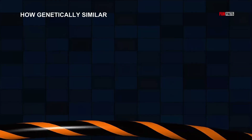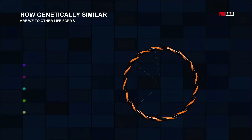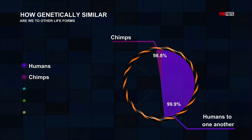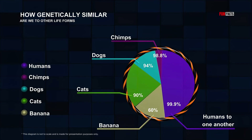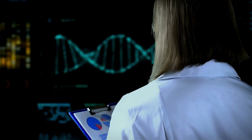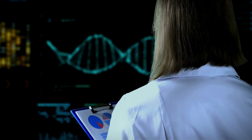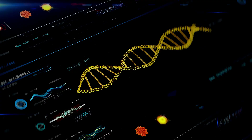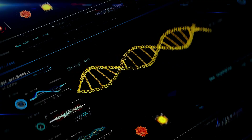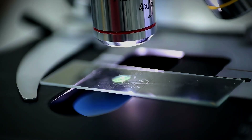For instance, humans share 98.8% of their DNA with chimpanzees, 94% with dogs, 90% with cats, and 60% with bananas. These genetic overlaps not only support the theory of common ancestry, but also reveal the intricate web of life that connects all organisms.